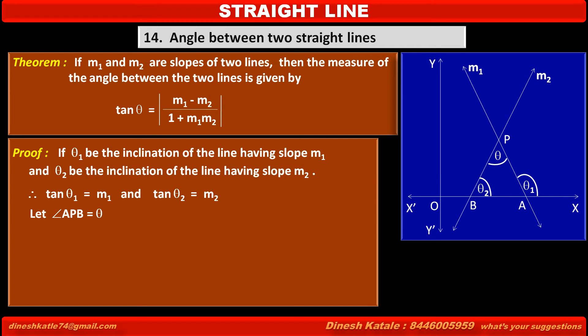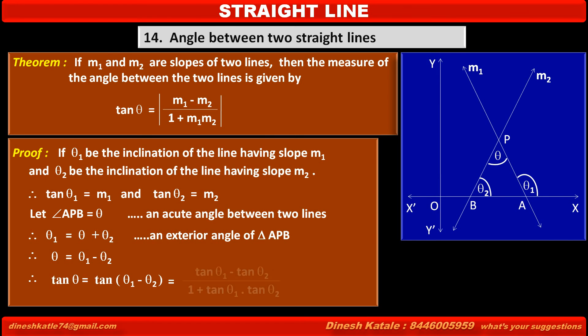Let angle APB = θ, an acute angle between two lines. Therefore θ₁ = θ + θ₂ as an exterior angle of triangle APB. Therefore θ = θ₁ - θ₂. Taking the tan ratio on both sides: tan θ = tan(θ₁ - θ₂) = (tan θ₁ - tan θ₂)/(1 + tan θ₁ tan θ₂) = (m₁ - m₂)/(1 + m₁m₂).